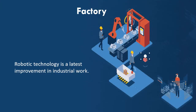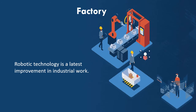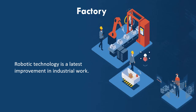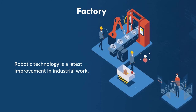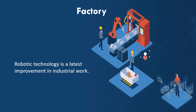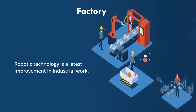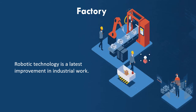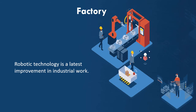Factories. Human labor is replaced by computer devices. As a result, production can be increased. The use of robotic technology is a latest improvement in industrial work, and activities in the industrial sector have become easier because of that.